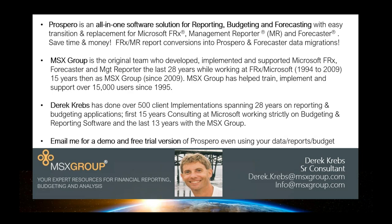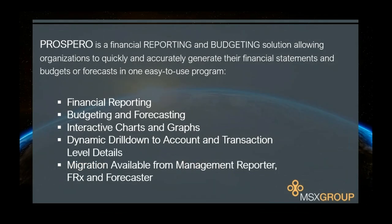We're going to jump right into the application after a few overview slides. Prospero grabs data from your general ledger — whether you have multiple companies or multiple segments like location, department, and account. Anything stored in those general ledgers can be reported and budgeted on. Prospero also has its own data warehouse for non-general ledger data — for example, budgeting down to the employee level, or reporting down to the product, salesperson, or customer level.